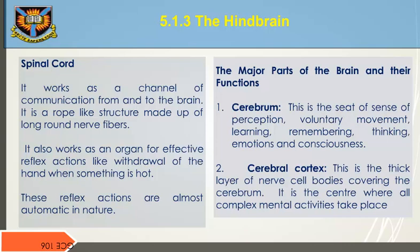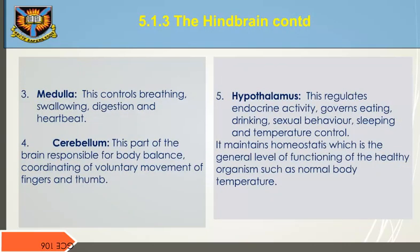These are the major parts of the brain and their functions. 1. Cerebrum: the seat of sense of perception, voluntary movement, learning, remembering, thinking, emotion, and consciousness. 2. Cerebral Cortex: the thick layer of nerve cell bodies covering the cerebrum; it is the center where all complex mental activities take place. 3. Medulla: controls breathing, swallowing, digestion, and heartbeat.